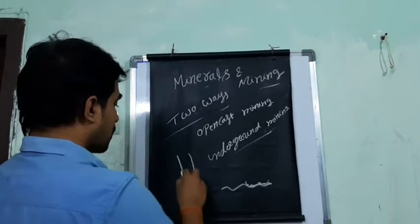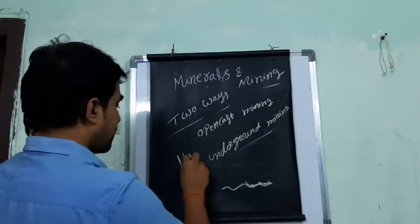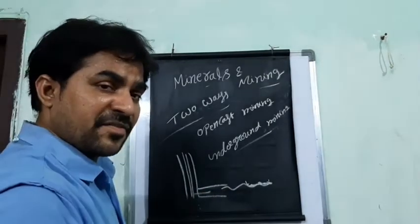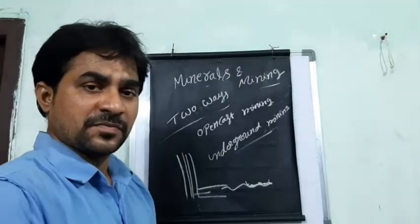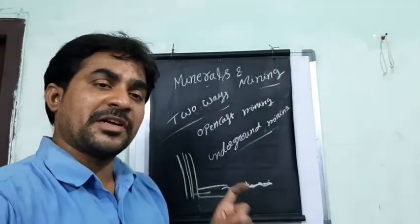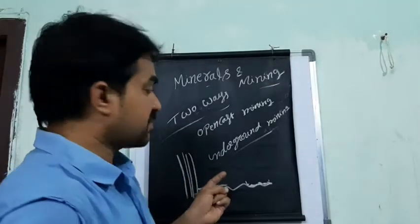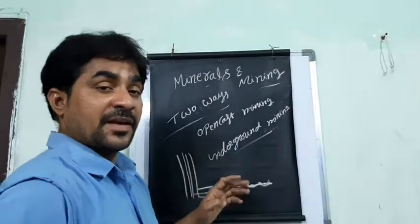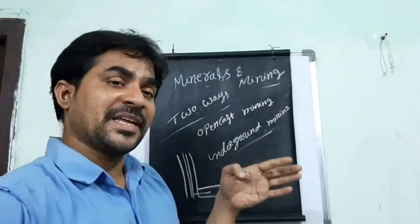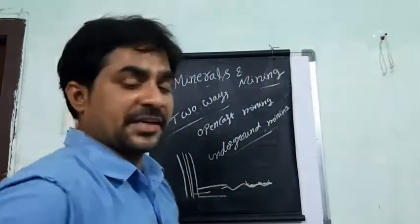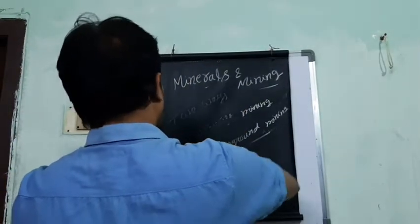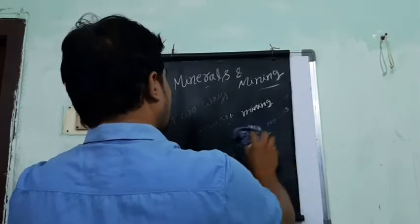In underground mining, a hole is kept and people go inside. Again they keep drilling holes in the ground, and mining is done inside the earth — that is called underground mining. Open cast mining is done on the land surface, while underground mining is done beneath the ground.